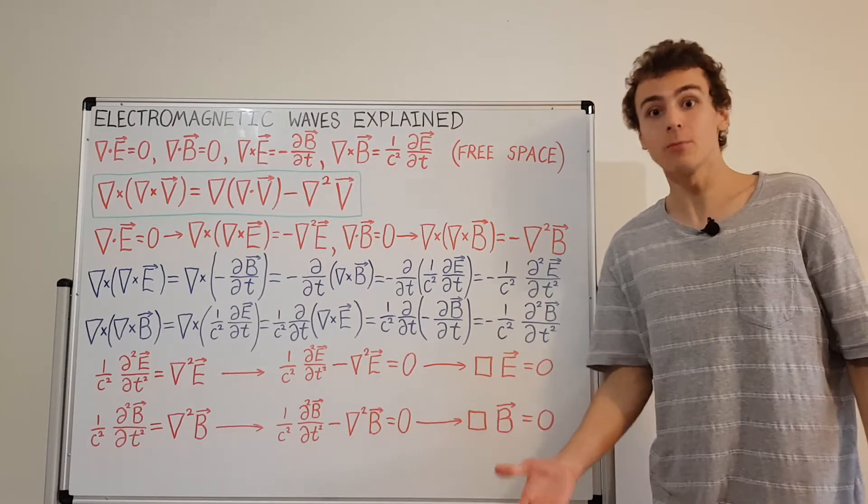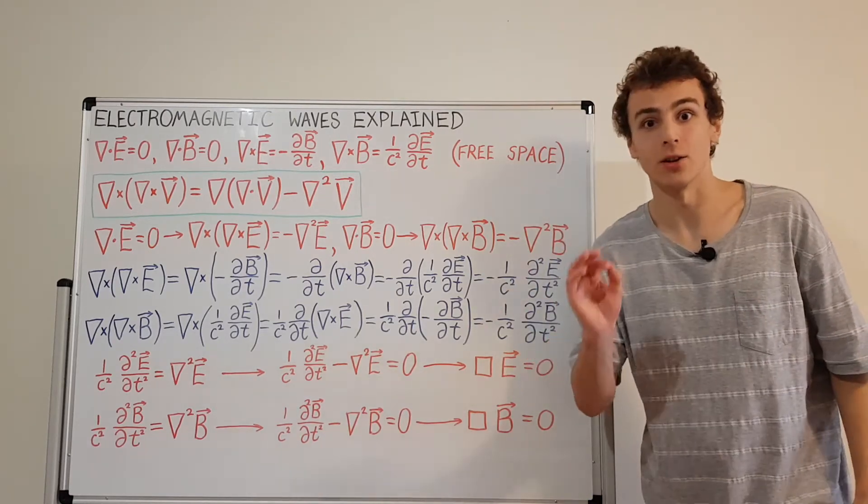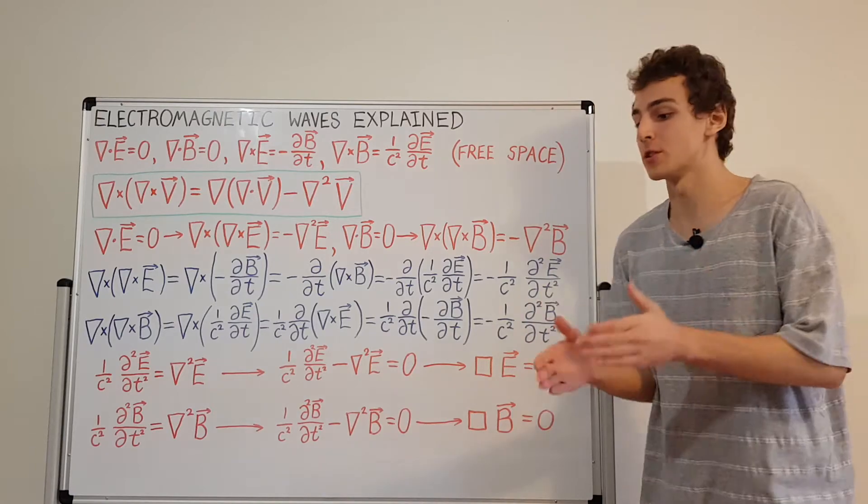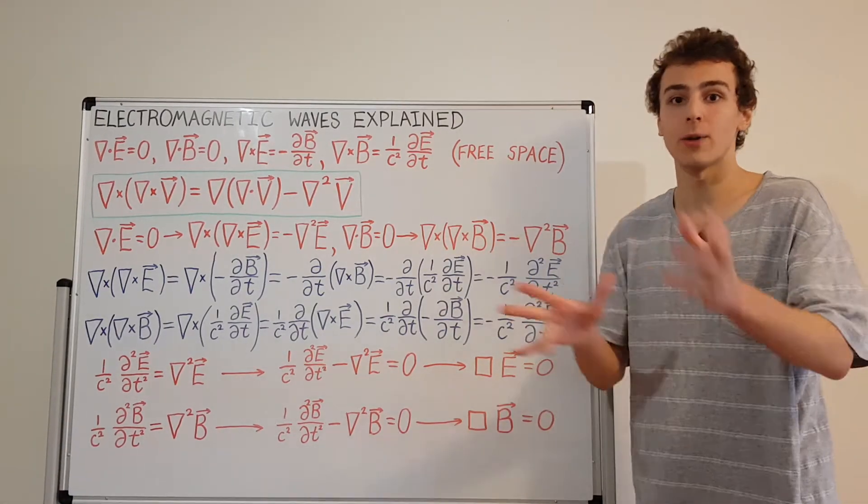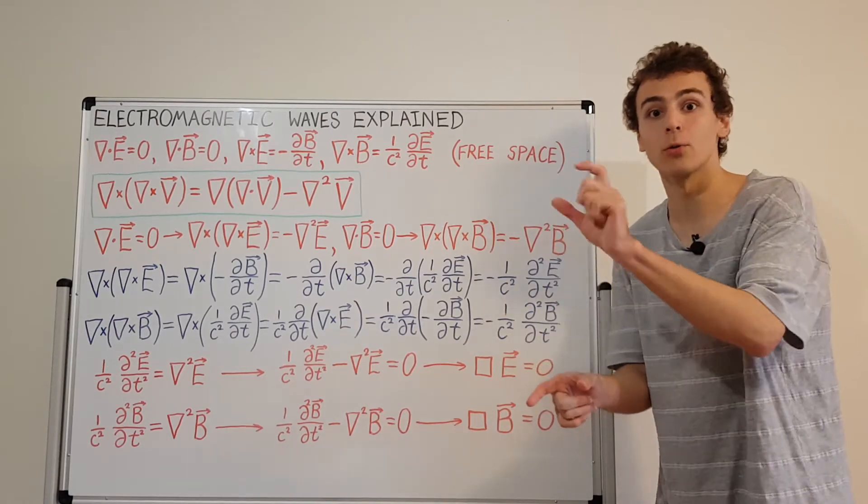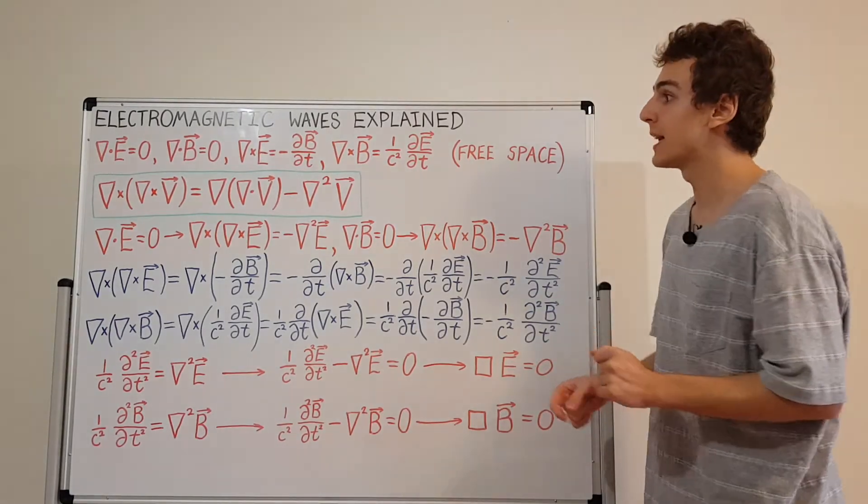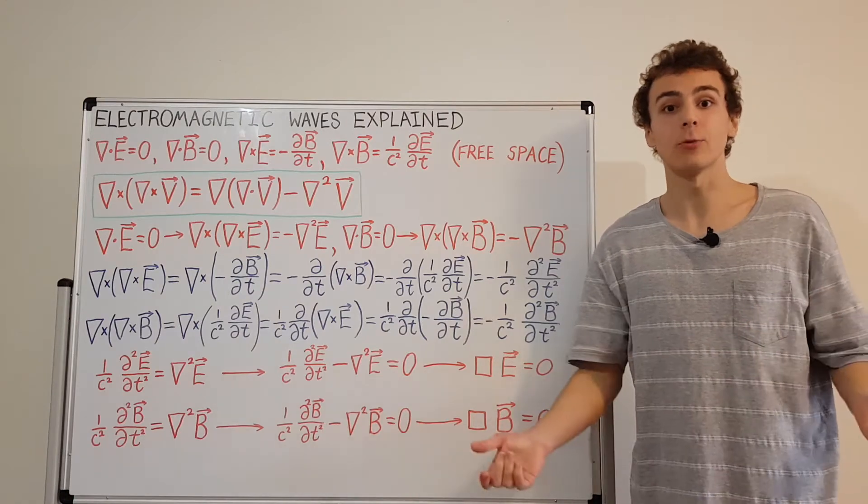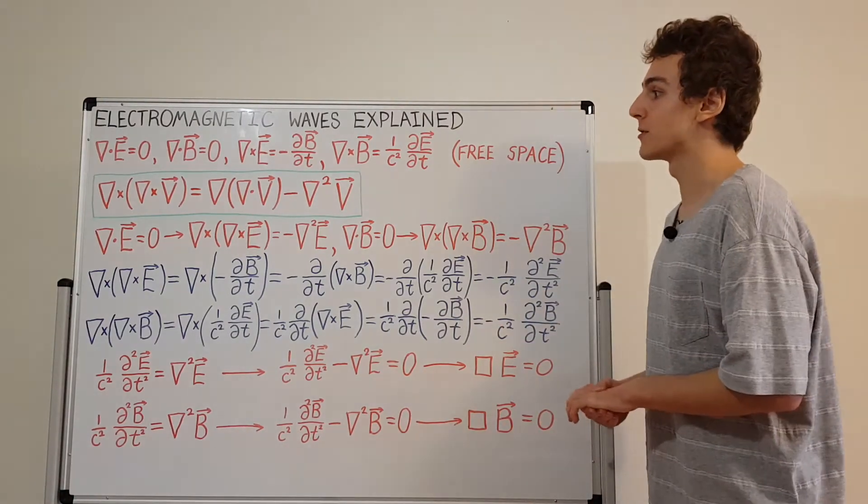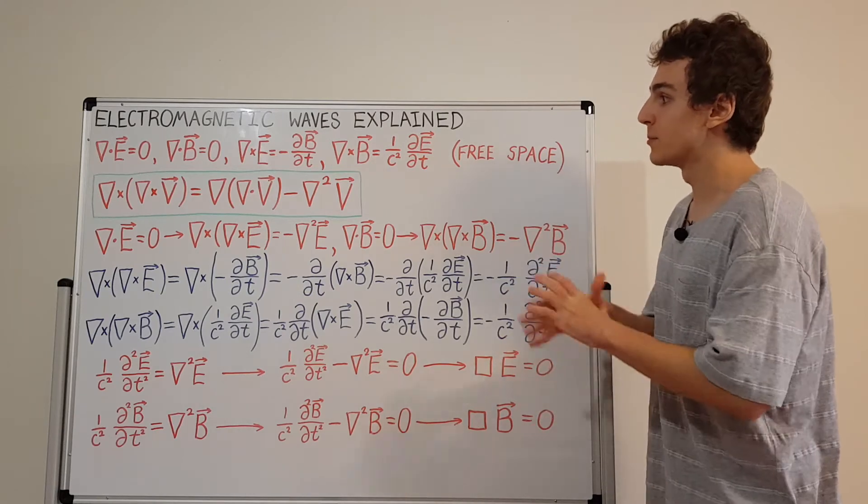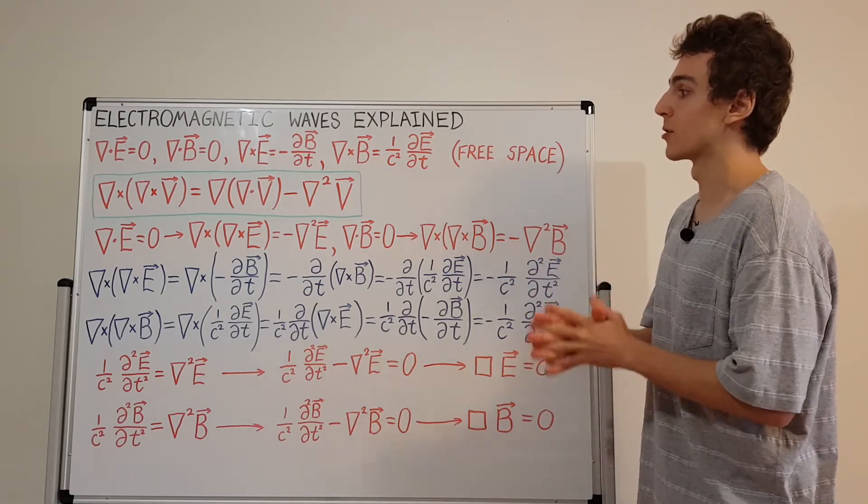So where do electromagnetic waves come from? Well, they come from sources of electromagnetic waves. And those sources could be charges moving in a wire. They could be charges just moving around in space. It could be a dipole rotating, or it could be a single charge moving around or accelerating. Accelerating charges actually produce electromagnetic waves. These are all possibilities where electromagnetic waves are involved.